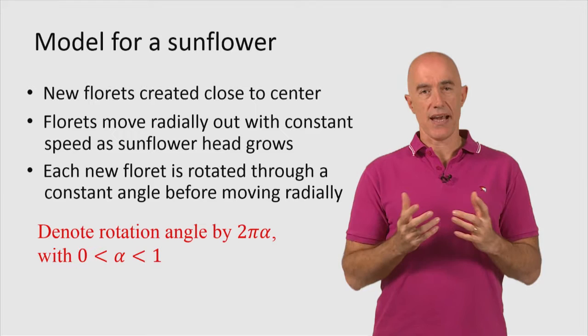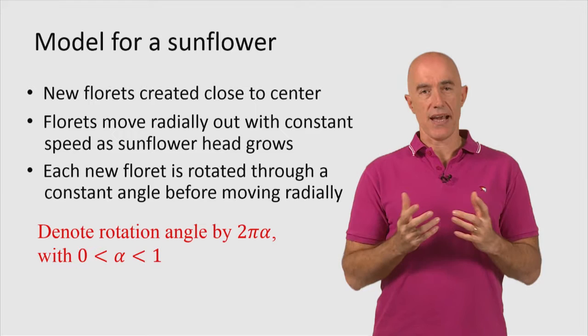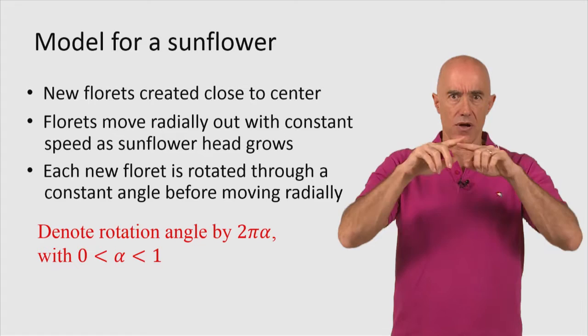And we can denote the angle by 2π alpha. So 2π is the angle of the whole circle. So alpha will be the fraction of the circle that the florets are being rotated.